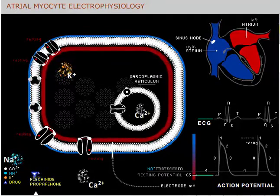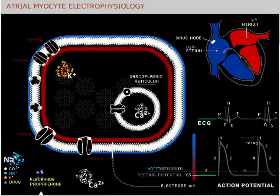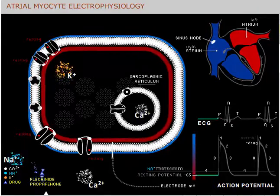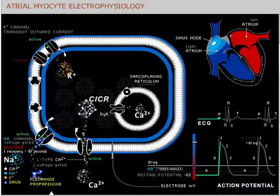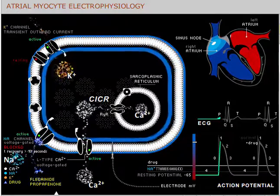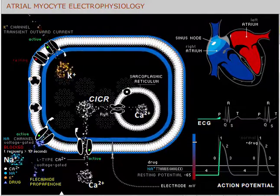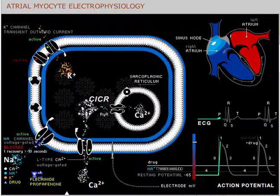Flecanide and propafenone are drugs used to treat atrial tachycardia, such as atrial fibrillation and atrial flutter. These agents bind the sodium channel in a state-dependent manner and block sodium influx into cardiac myocytes.